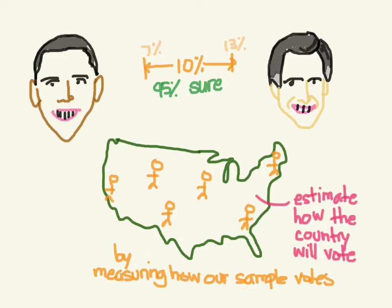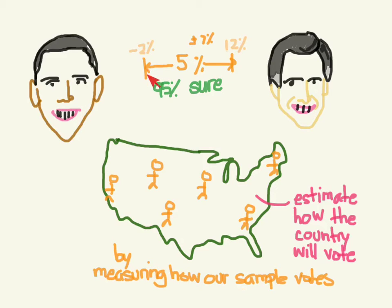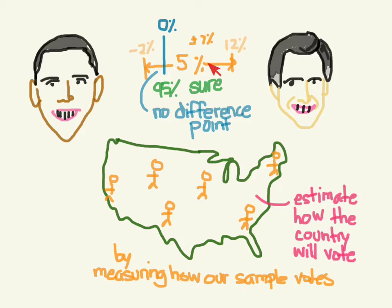Our point estimate is 10%, plus or minus 3%, so we're 95% sure that candidate A is beating candidate B. But what if our estimate was different — say a point estimate of 5% with a confidence interval of plus or minus 7%? We'd be 95% sure the real value is somewhere between negative 2% and 12%. We can't even be sure candidate A is in the lead, because it could be negative 2%, meaning candidate B might be leading. This confidence interval spans the no-difference point, making it fairly useless to us.